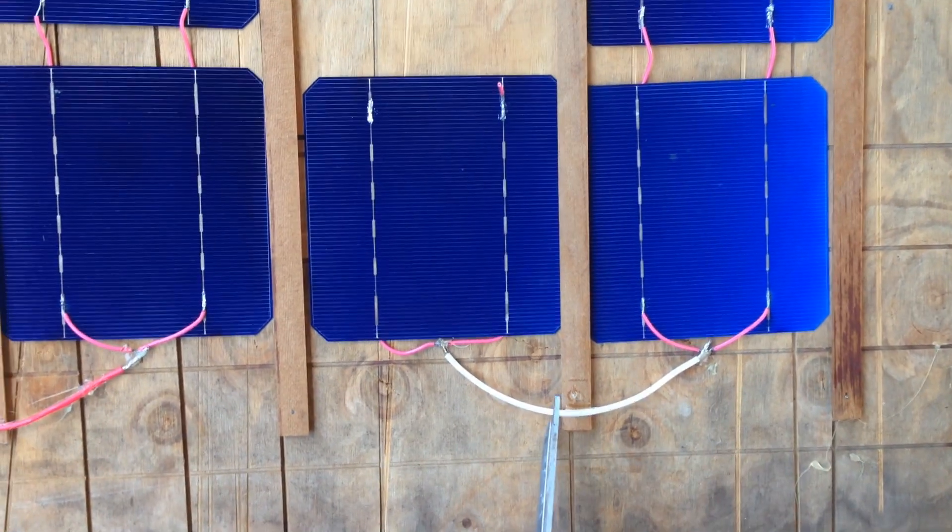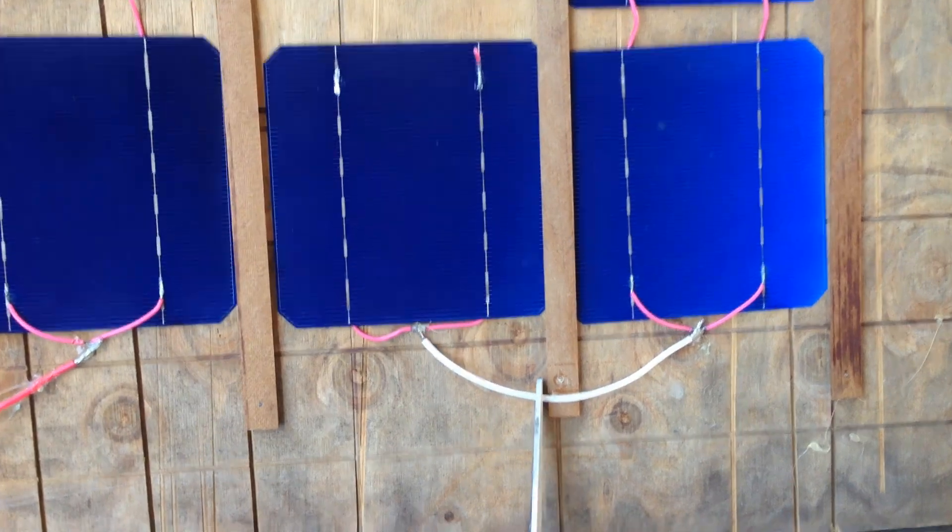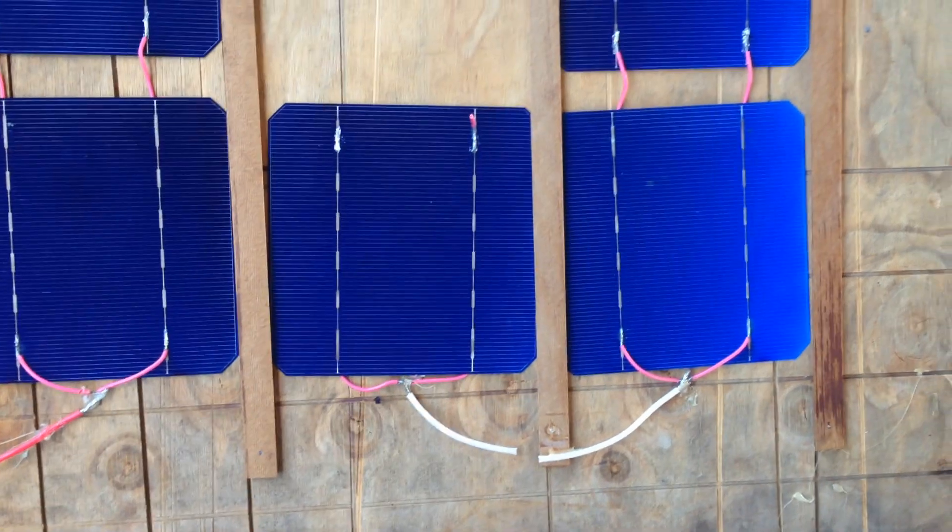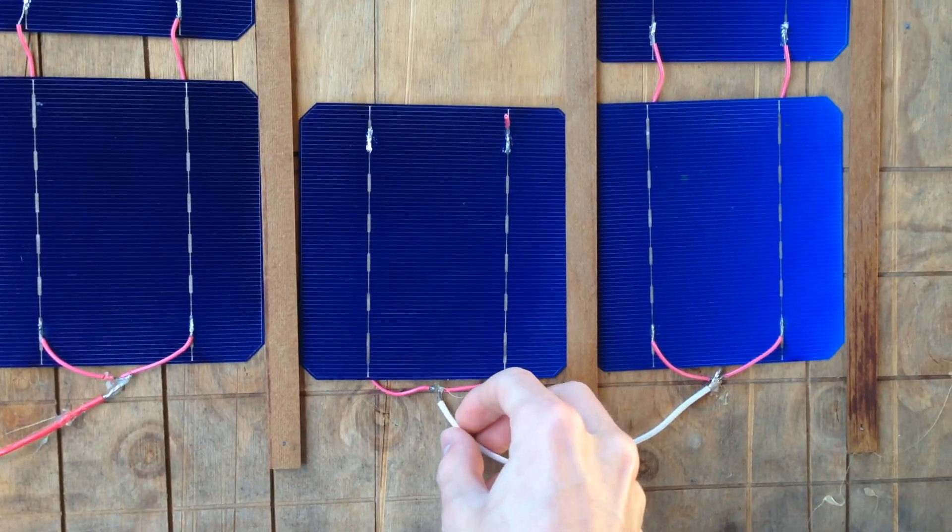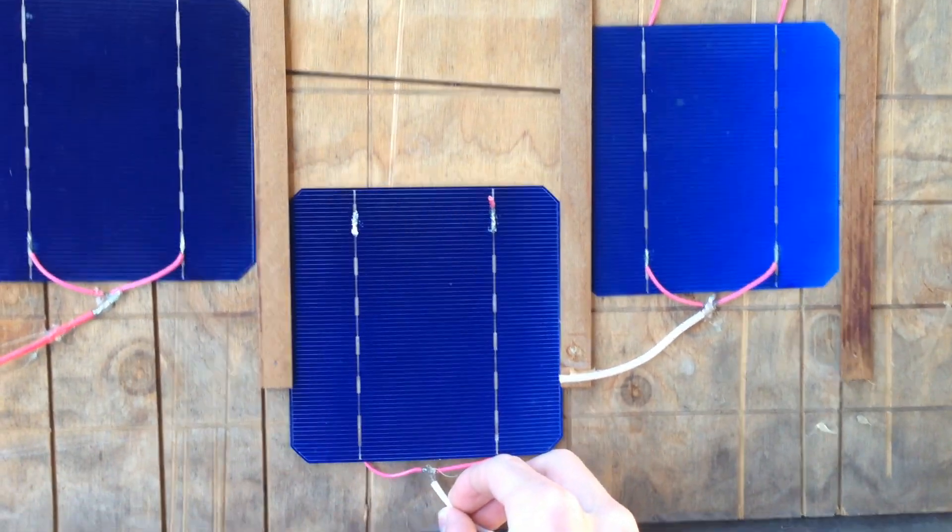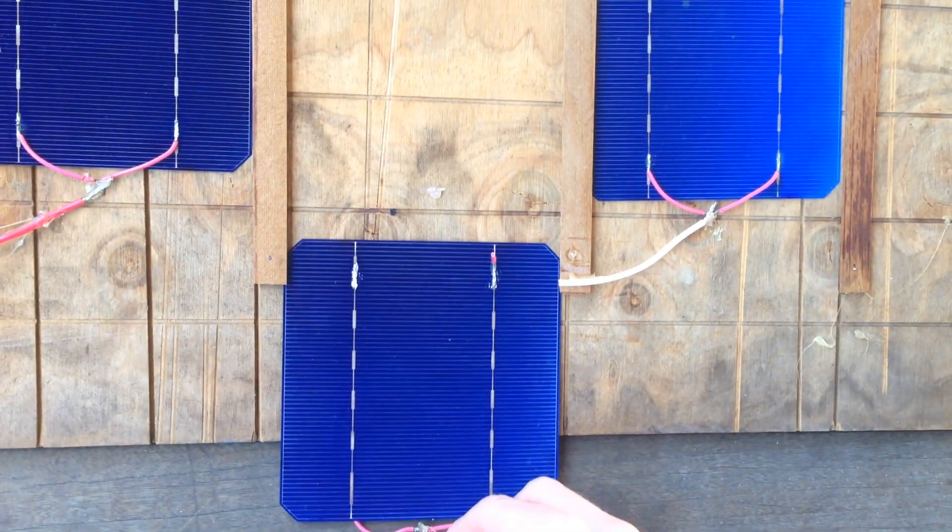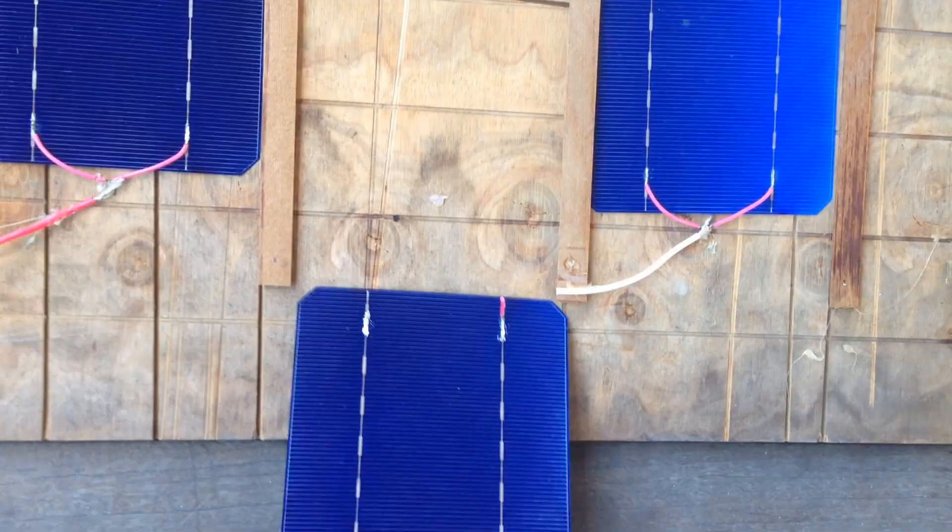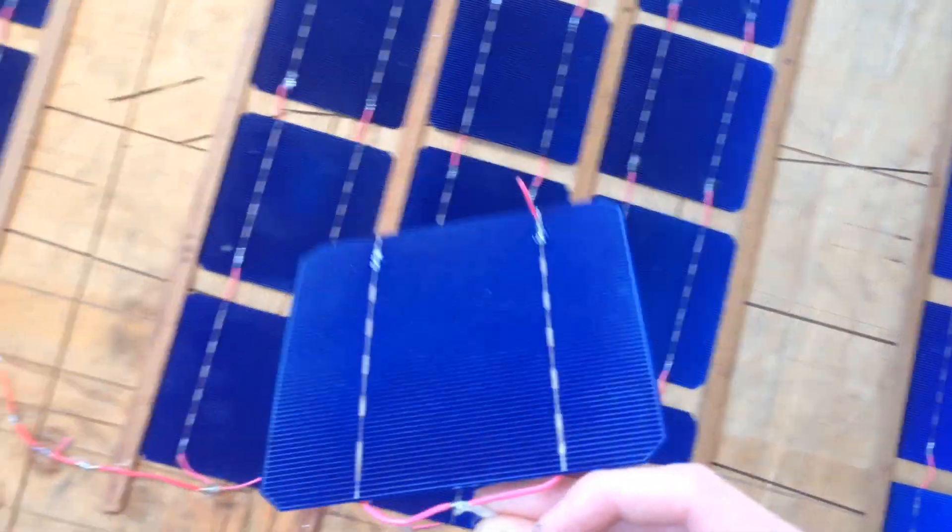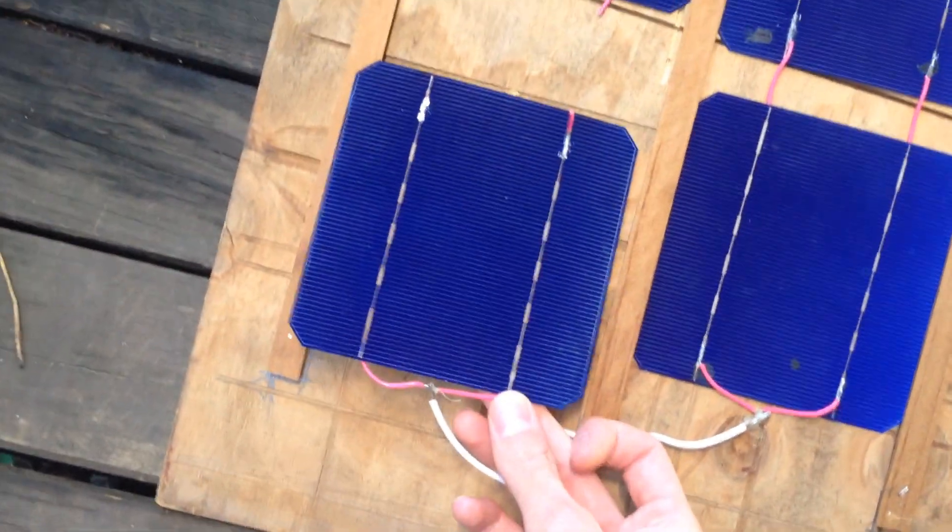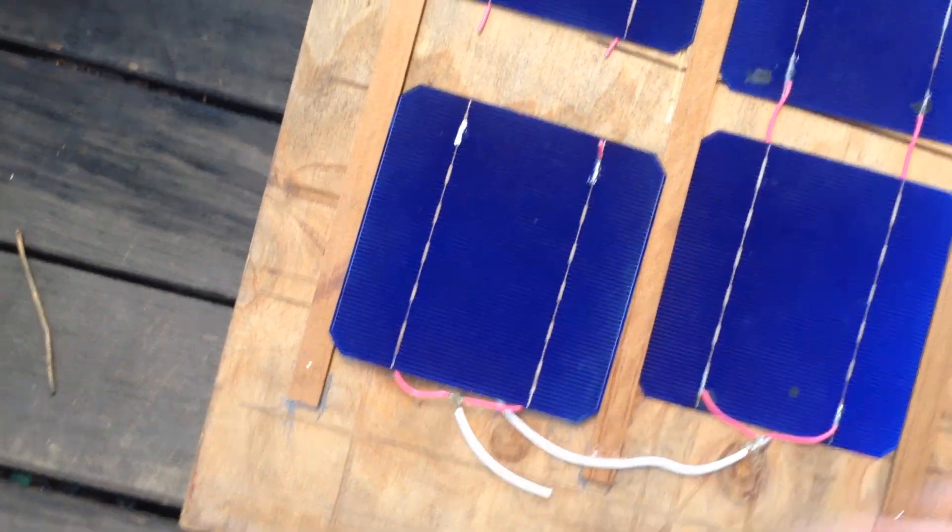We'll cut this one off. There we are. Slide this one out carefully because this is an intact one. Actually, that won't slide out the bottom, will it? There we are. Intact solar cell. I'm going to put it over here. Hopefully I'll be able to slide that in. Get that done now.